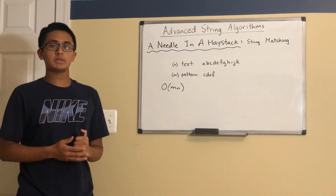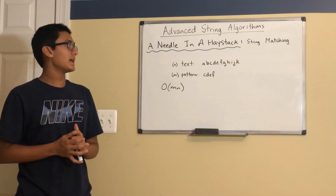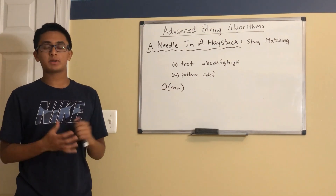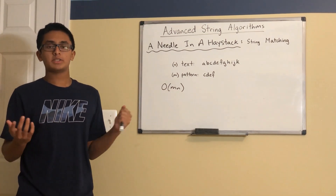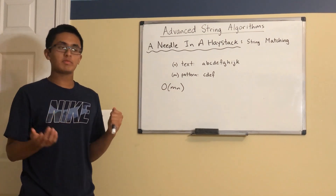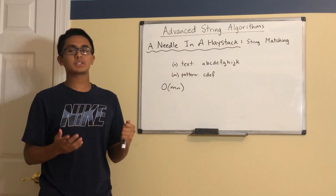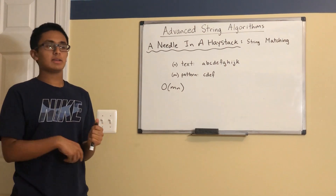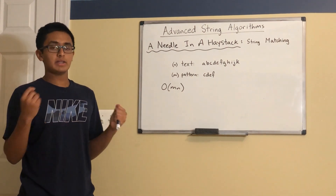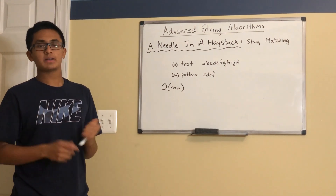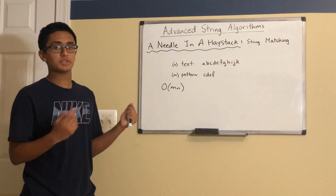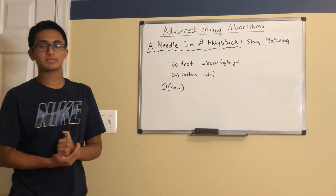We can improve upon this by employing two other algorithms, which are more sophisticated but pretty easy to implement, known as Rabin-Karp and KMP. String matching in general is also known as a needle-in-a-haystack problem, as it's similar to finding a needle — which is your pattern — inside of a large haystack, which is your text.